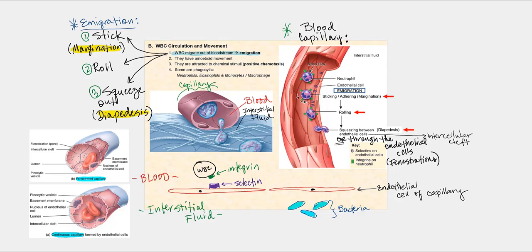One unique characteristic of leukocytes is the ability to migrate out of a blood vessel, a process referred to as emigration — the E stands for exit. There are four steps in emigration. Number one is margination, where the leukocyte sticks or adheres to the surface of the endothelium — the endothelial cells forming the tunica intima, the inner lining of blood vessels. After they marginate, they roll, and then eventually squeeze out through a process called diapedesis, using amoeboid movement to squeeze through intercellular clefts and fenestrations.